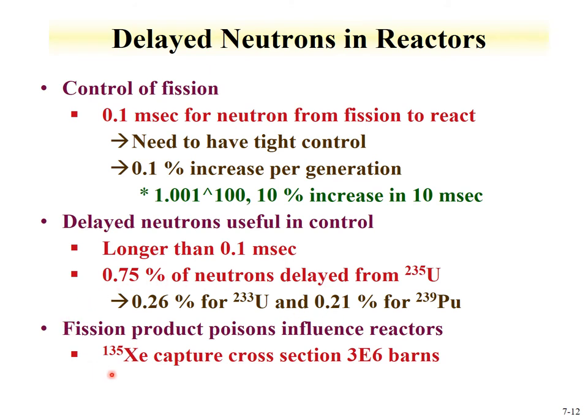Fission products also influence reactors through neutron absorption. The production of xenon-135 as a fission product is notable because it has a very large neutron capture cross-section of 3×10^6 barns. Buildup of xenon-135 in reactors can poison the reactor — the increasing xenon-135 captures more and more neutrons, potentially shutting down the fission process.